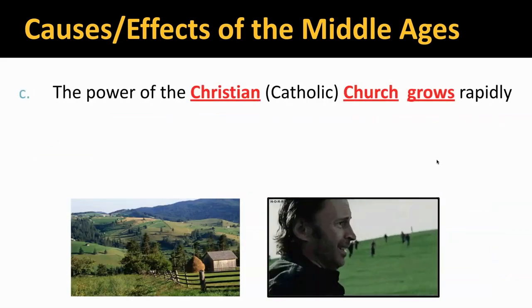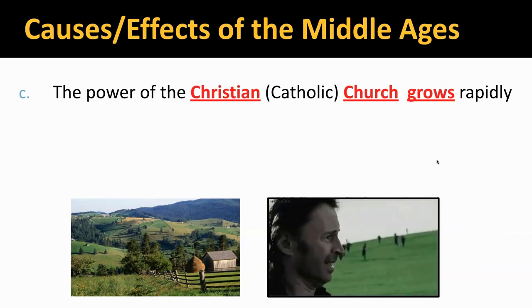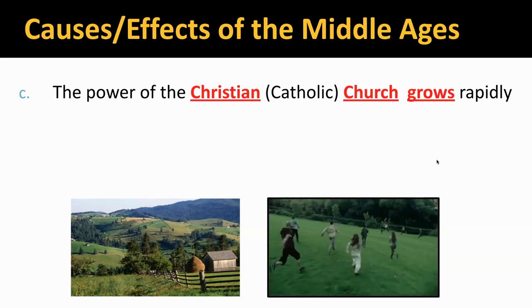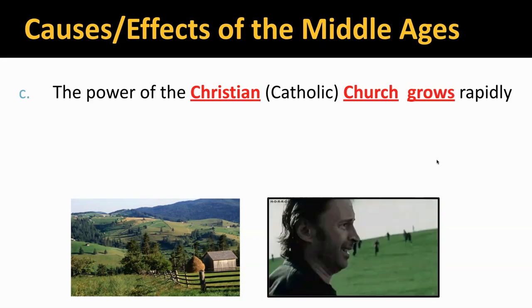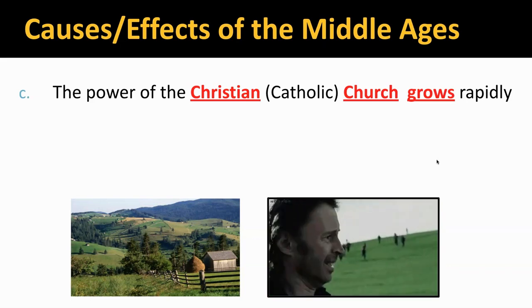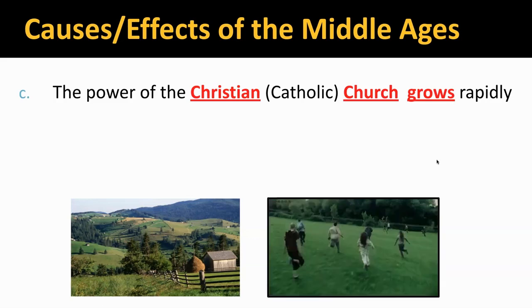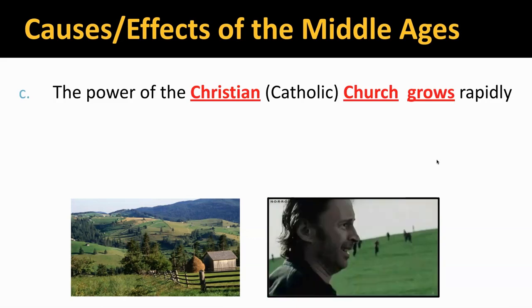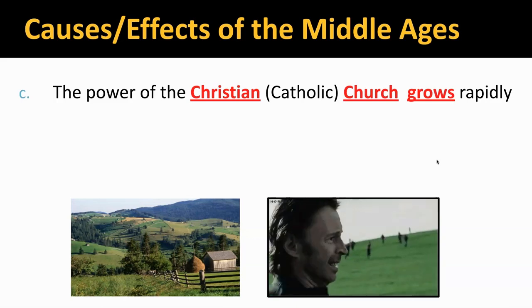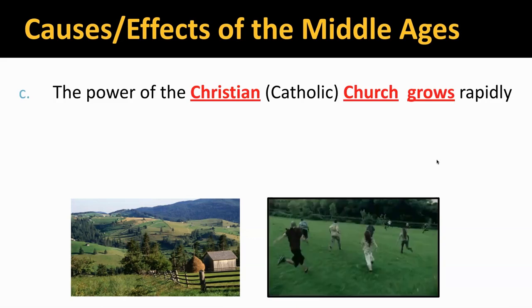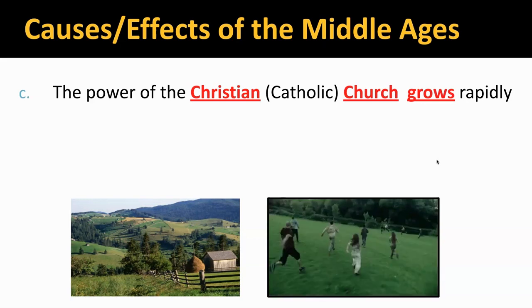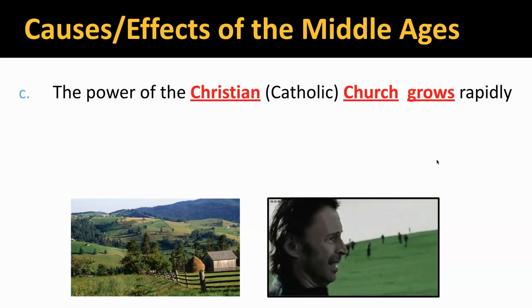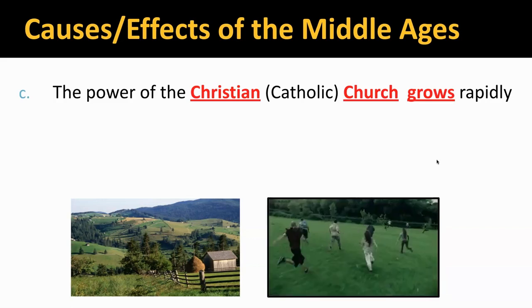As things typically happen in history, as one group dies, another group steps in to assume power. Without strong leadership through a good chunk of the Middle Ages, somebody had to step up — and that's going to be the Catholic Church. The power of the Catholic Church is going to grow quite rapidly. We're going to focus heavily on that as one of our learning outcomes in this unit, seeing how the church becomes a pretty big deal in Europe during the Middle Ages.